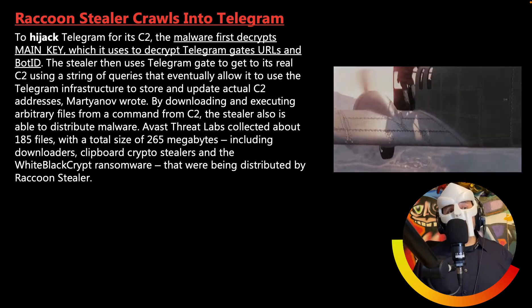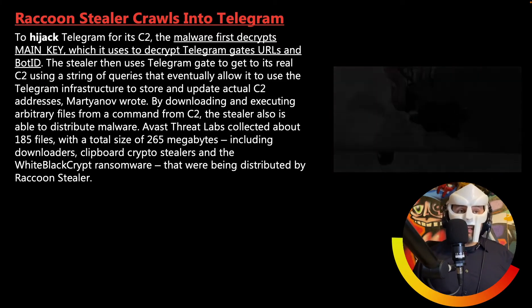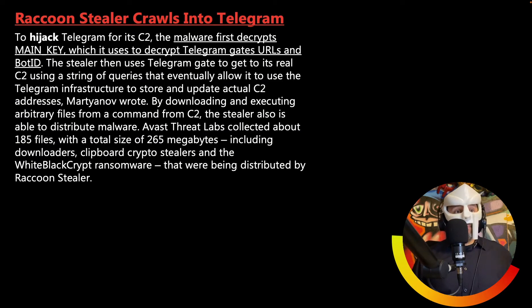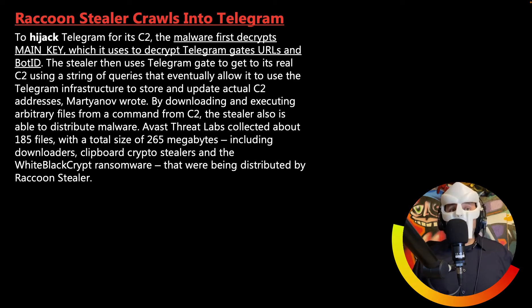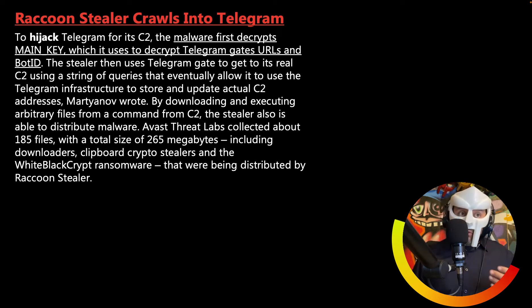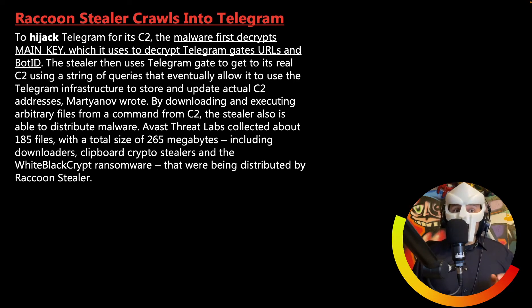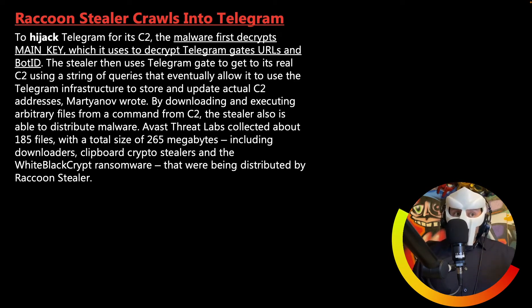To hijack Telegram for its command and control system, the malware first decrypts a main key, which it uses to decrypt Telegram gate URLs and bot ID. The Stealer then uses the Telegram gate to get to its real command and control system using a string of queries that eventually allow it to use the Telegram infrastructure to store and update actual command and control addresses. By downloading and executing arbitrary files from commands received from the command and control server, the Stealer is also able to distribute malware. Avast Threat Labs collected about 185 files with a total file size of 265 megabytes, including downloaders, clipboard crypto stealers, and WhiteBlackCrypt ransomware that were being distributed by Raccoon Stealer.